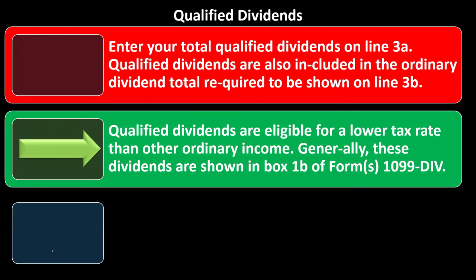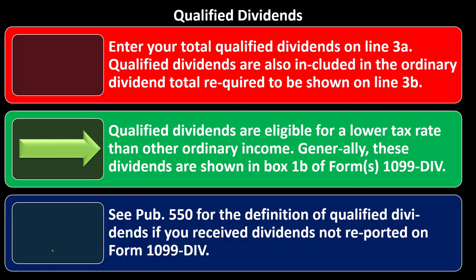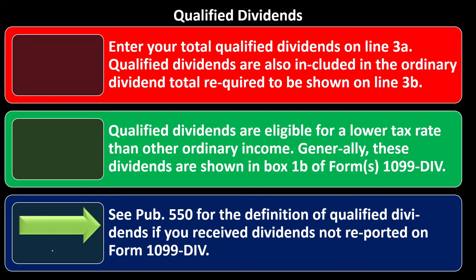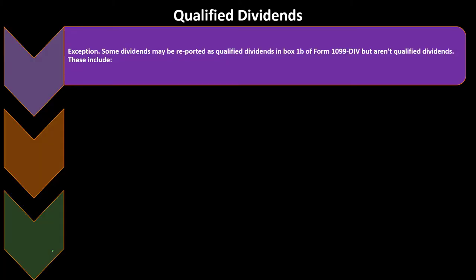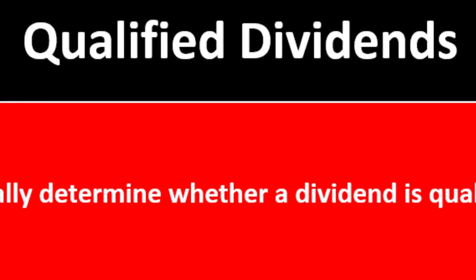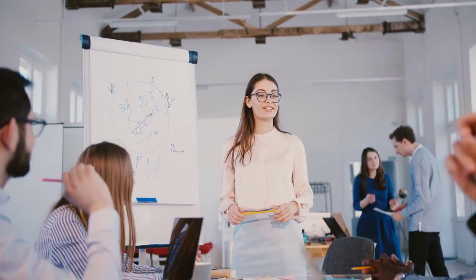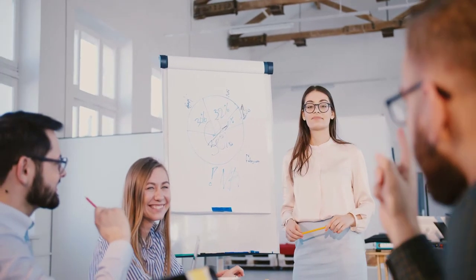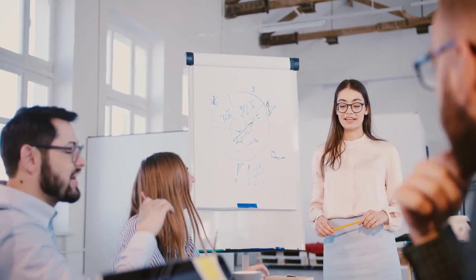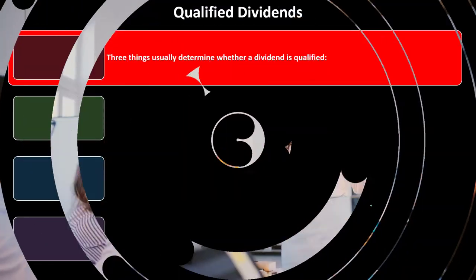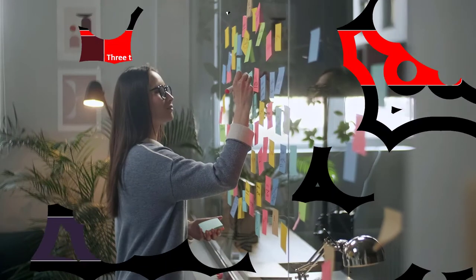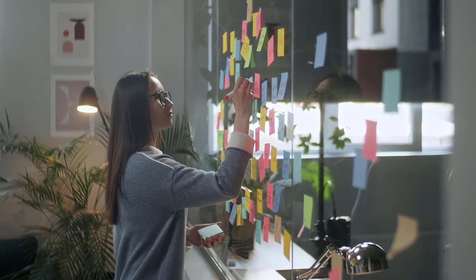Generally these dividends are shown in box 1B of Form 1099-DIV. See Publication 550 on the IRS website for the definition of qualified dividends, including if you receive dividends not reported on Form 1099-DIV. In general, there are three things that will help determine whether a dividend is qualified or not, and these are useful to discuss with the client, who may ask why a dividend would be qualified or not - and for planning purposes when investing, it could be relevant.